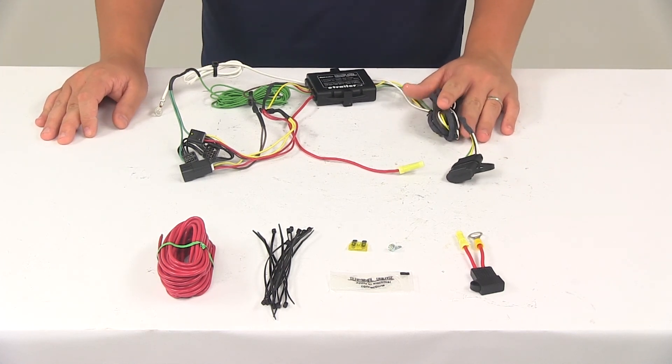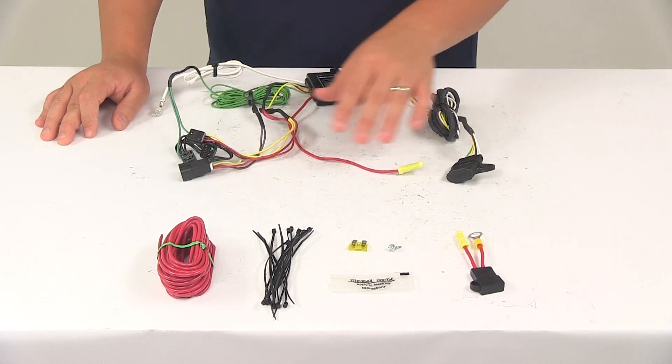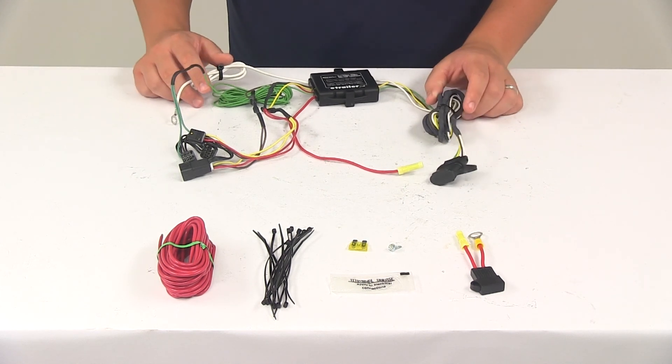It's also recommended that you use a small amount of the included terminal grease on all your electrical connections, like the plugs on the vehicle and the four-pole connector itself. The grease is designed to help prevent corrosion to the connection points.